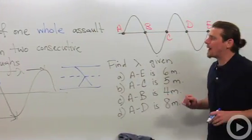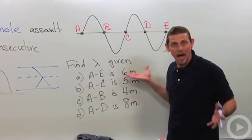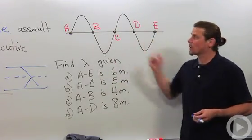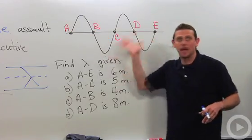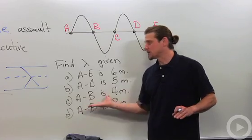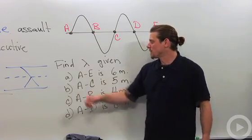So let's talk about some problems that I've seen on tests asking about wavelength. So suppose that we're given a wave, a periodic wave like this, and we've got some points labeled. And we're asked to find the wavelength given a bunch of different situations.